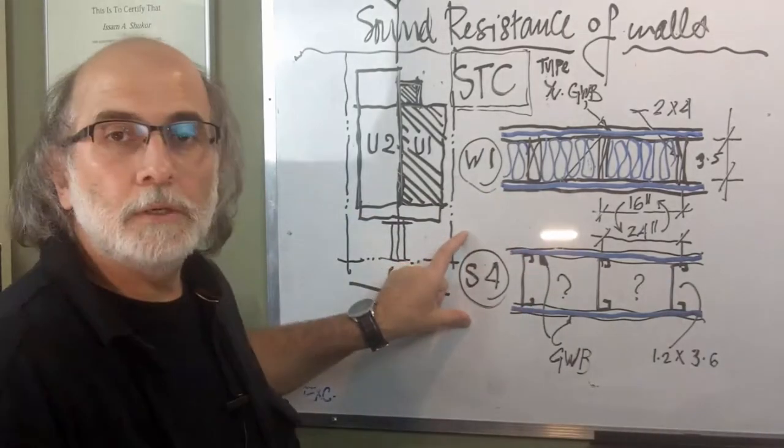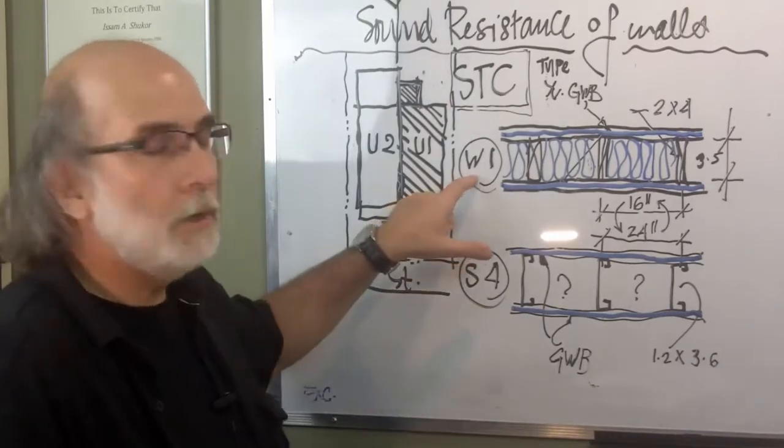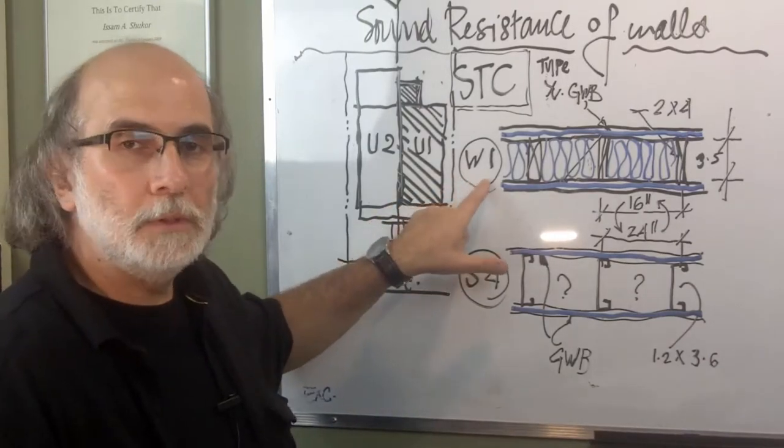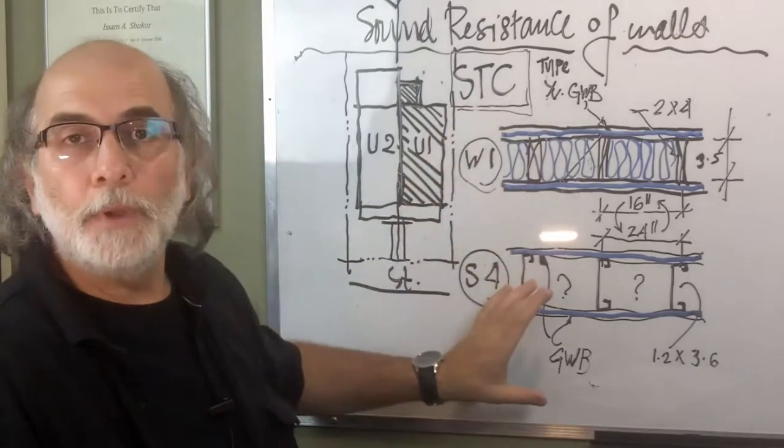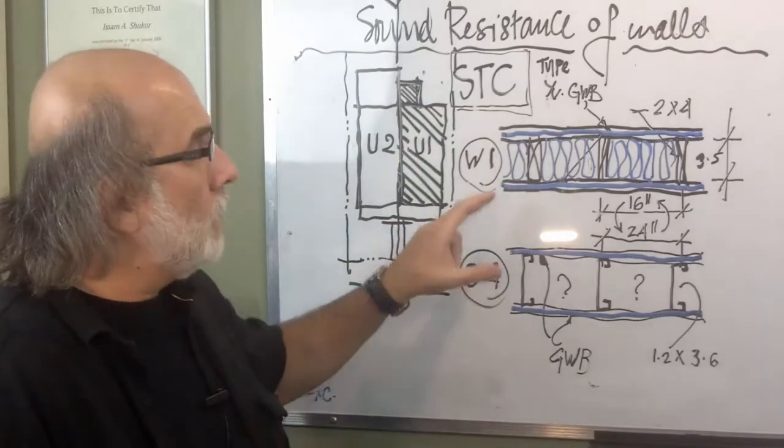So, this is type wall number S4, which means steel stud 4, and this is wood stud number 1. And I'm comparing them in terms of STC, which is sound transmission class.